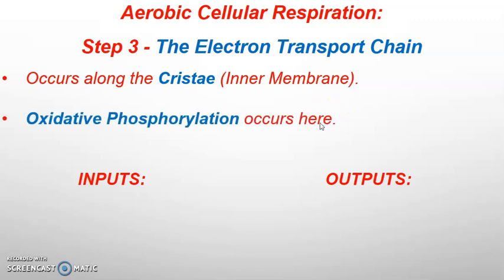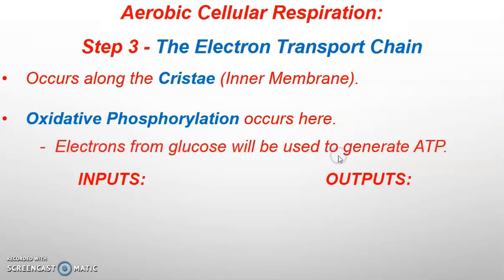What's happening during the electron transport chain is what we call oxidative phosphorylation. It's going to be very similar to what we saw during the light reactions called photophosphorylation. But instead of light energy exciting electrons to create a hydrogen gradient, we are now going to be using the electrons we've been collecting as we've been breaking down glucose since glycolysis, and those electrons will be used to create the hydrogen gradient to make ATP.